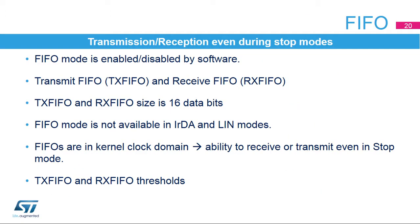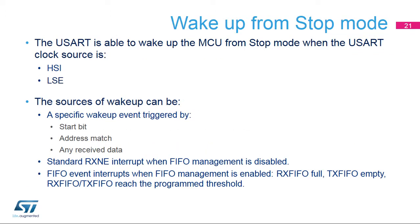The USART can operate in FIFO mode, which is enabled or disabled by software; it is disabled by default. The USART comes with a transmit FIFO (TX FIFO) and a receive FIFO (RX FIFO), each being 16 words deep. When IRDA and LIN modes are used, the FIFO mode is not supported. Provided that the TX FIFO and RX FIFO are clocked by the kernel clock, it is possible to transmit and receive data even in stop mode. It is possible to configure TX FIFO and RX FIFO thresholds, mainly to avoid underrun-overrun issues while waking up from stop mode. The USART is able to wake up the MCU from stop mode when the USART clock source is the HSI, LSE, or CSI clock.